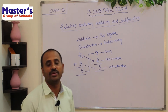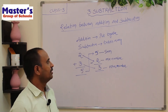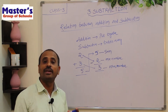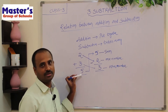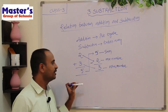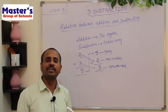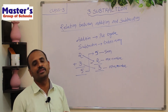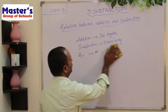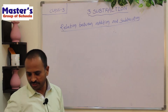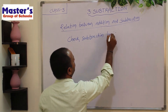By using this property we can check our subtraction — whether our answer is correct or not. We can check our subtraction by using addition, and we can check our addition by using subtraction. For example, the sum of 2 and 3 is 5. If we subtract any number from 5 we get the other number, so the answer is correct. Checking of subtraction: check subtraction by addition.